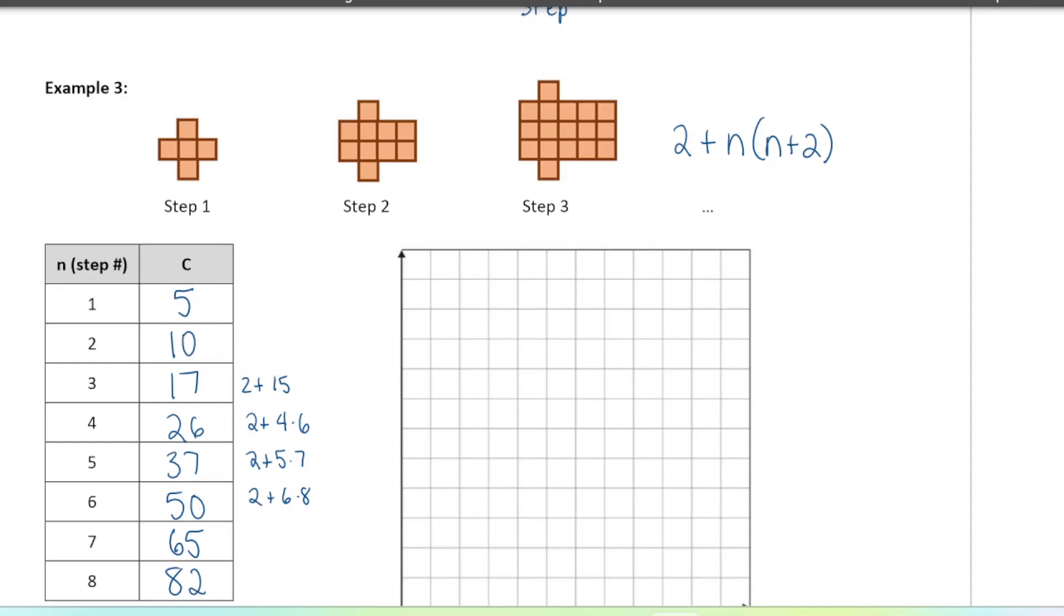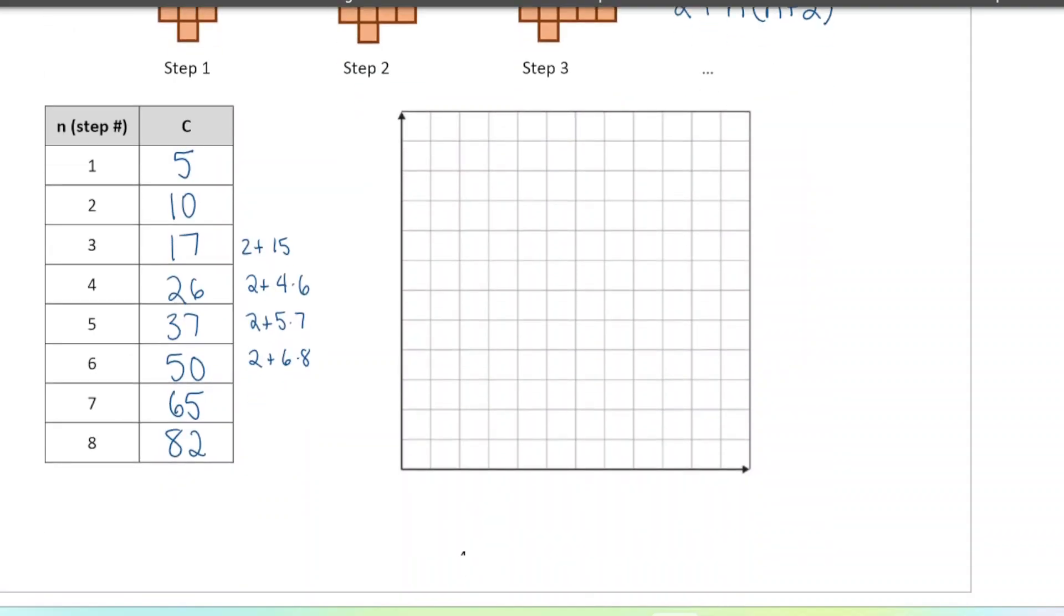We're not increasing by a consistent amount here. If we look at what we're increasing by, this is not going to be a linear pattern because you go up by five and then seven and then nine. It's not a consistent amount. So this is not going to be linear. So I'm not expecting these points to line up in a straight line.